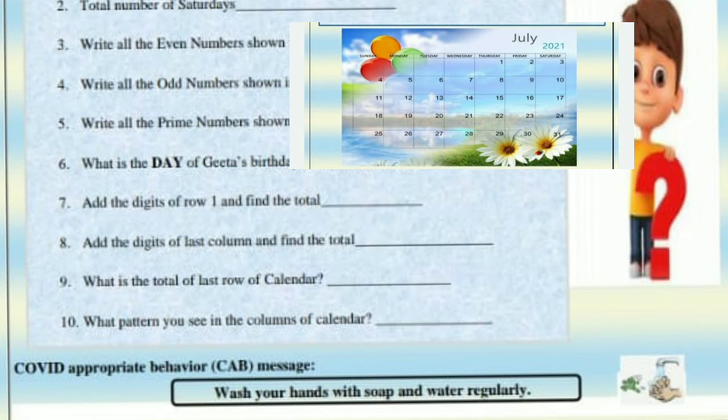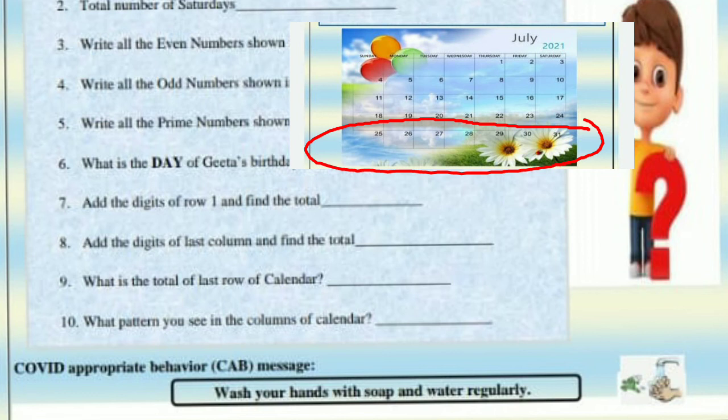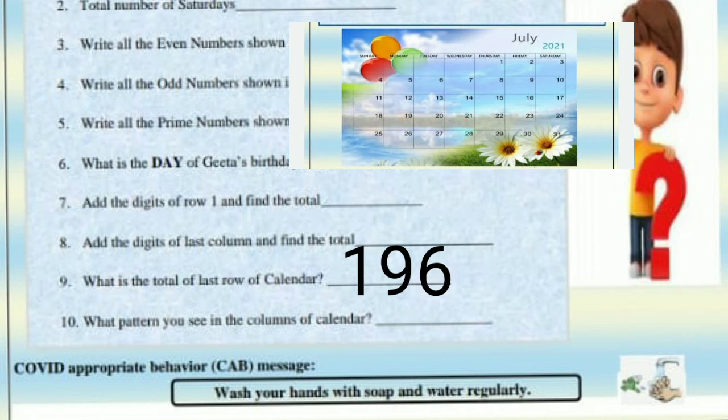Ninth: what is the total of the last row of the calendar? The last row numbers are 25, 26, 27, 28, 29, 30, and 31. The total will be 196. So we write 196.